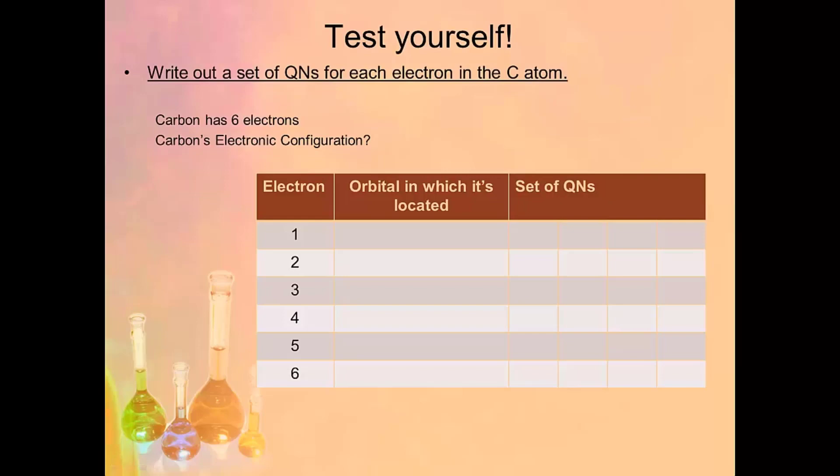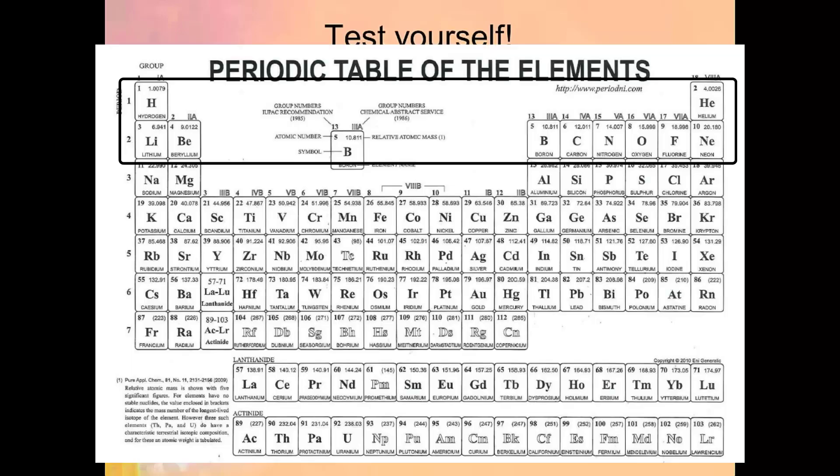So looking at carbon on your periodic table, we know that carbon is 1s², 2s², 2p². So we've got 2, 4, 6 electrons.